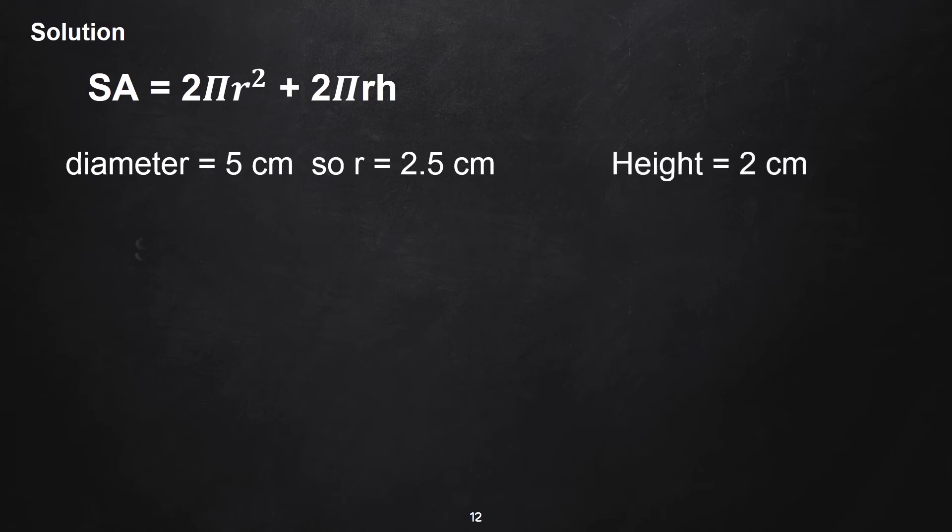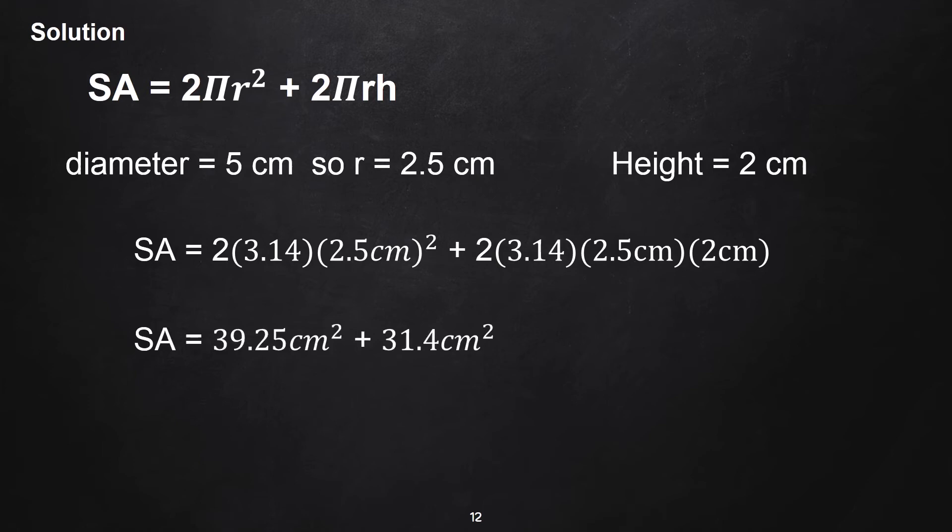Just substitute all the values to their respective variables in the formula. So, for the 2πr², we have 39.25 centimeters squared.